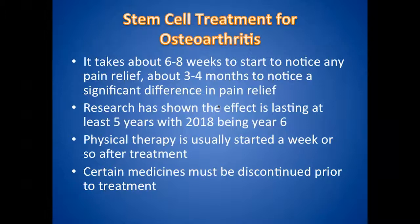Depending on the joint, bracing may sometimes be necessary — for the knee, ankle, thumb, or wrist. Shoulders we like to move as soon as possible because if not moved they tend to freeze and lose motion. There are also certain medications that need to be discontinued prior to treatment because they can keep the stem cells or platelets from working properly — we go through all of that with you if you are interested.